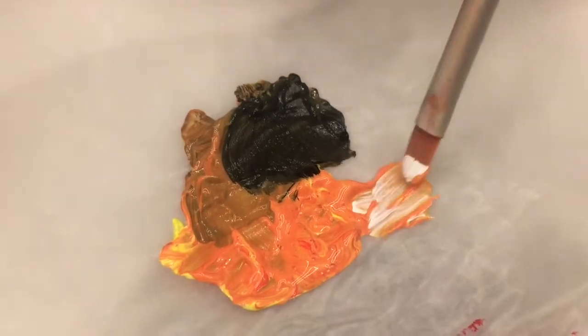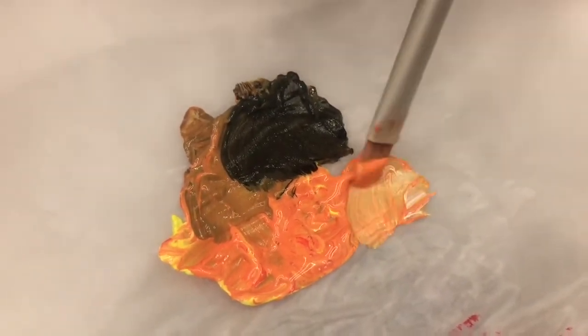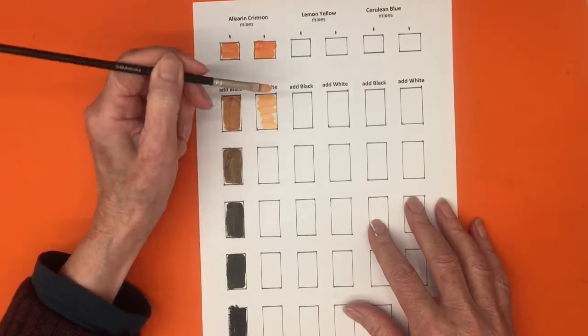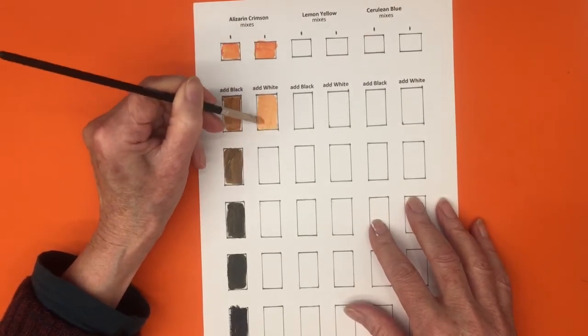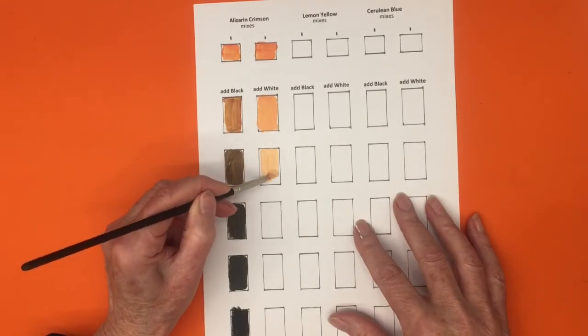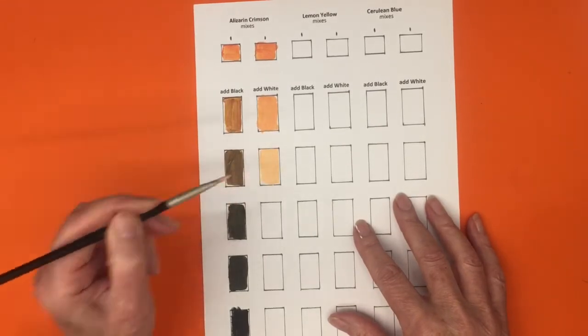In the second row start with your middle orange again and add white ending with pure white in the last box.